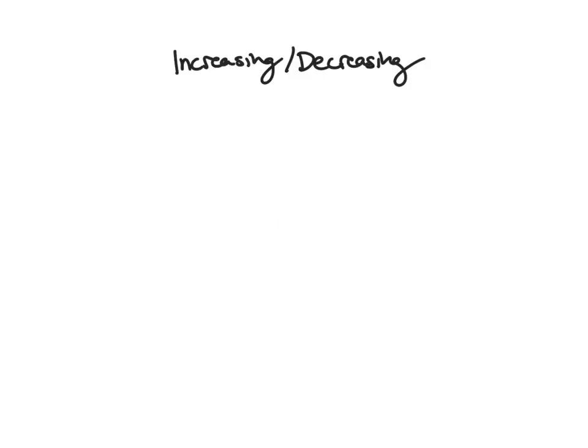First we're going to define what we mean by an increasing or decreasing function. This is something that we can figure out from a picture pretty easily. This is increasing, this is always decreasing, but what is the rigorous definition here?